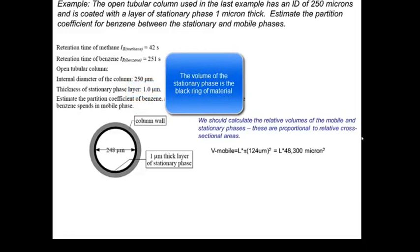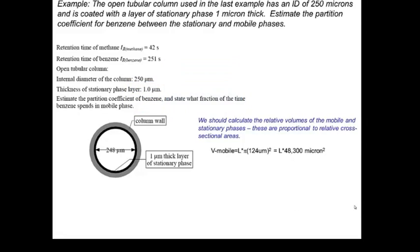So the volume in the mobile phase is going to be the length of the cylinder times pi r squared. But remember that r, in this case, is half of that internal diameter. And since I had to take into account the 1 micron thick stationary phase, that's going to give me 124 micron squared for the radius. And so there I have it with l, which I don't know.